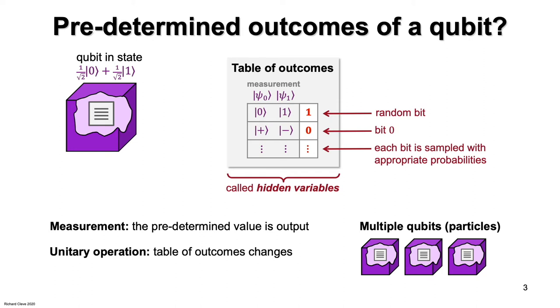This is consistent with what happens when we measure several qubits that are each in the plus state. What's interesting about this hidden variables picture is that so far, everything is consistent with quantum behavior.